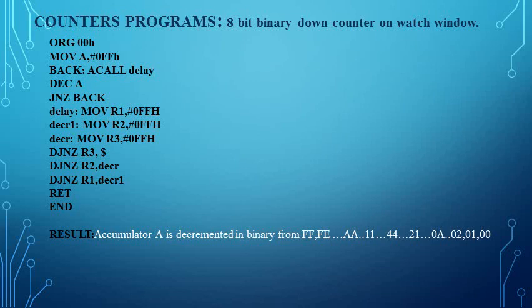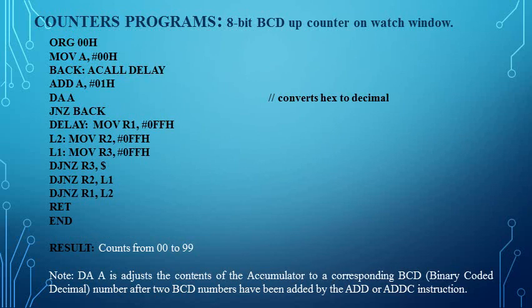Next we have the 8-bit BCD up counter. BCD stands for Binary Coded Decimal. Binary Coded Decimal numbers range from 0 to 9. Since we are working in 8051, after 9 the number will be in hexadecimal, so any number above 9 must be converted back to decimal. This conversion is done with the help of a specific instruction.